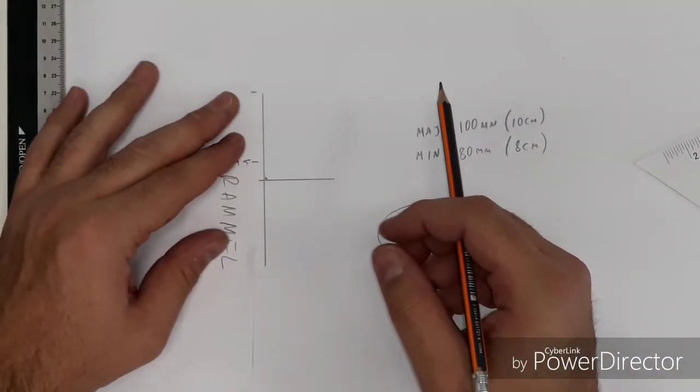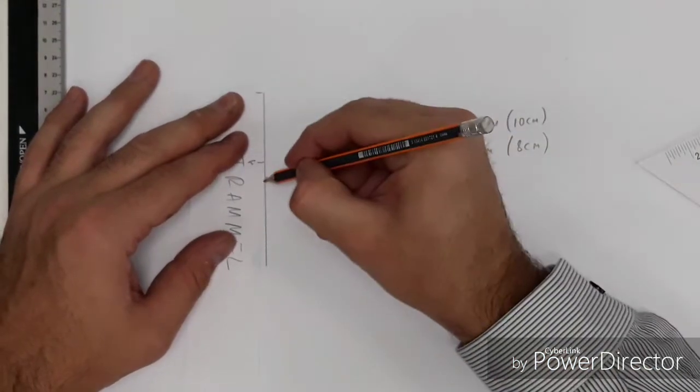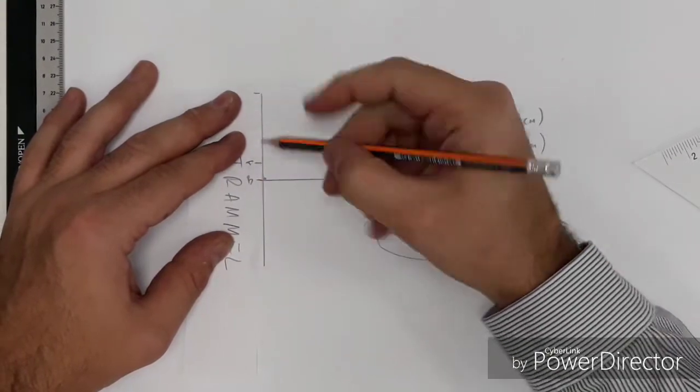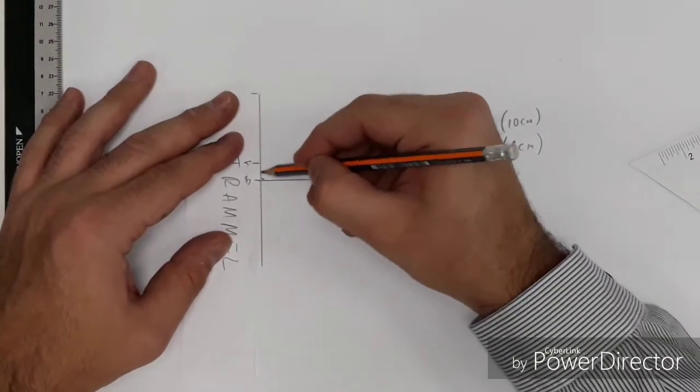Then what we do, we place that on the major axis and we mark point B, which is the difference between the minor and the major axis.